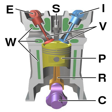An internal combustion engine is a heat engine where the combustion of a fuel occurs with an oxidizer in a combustion chamber that is an integral part of the working fluid flow circuit.